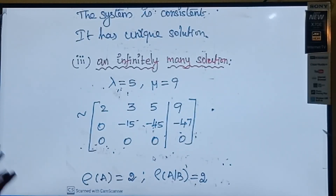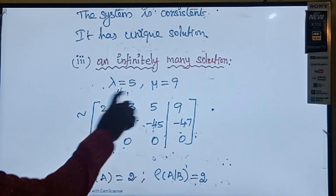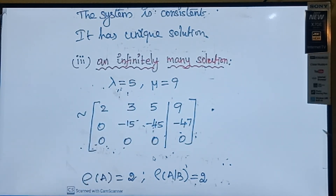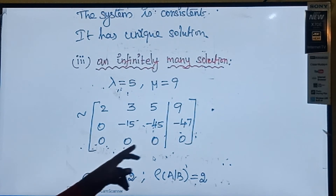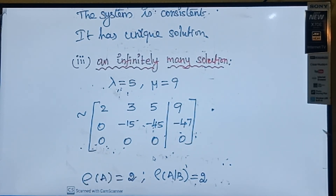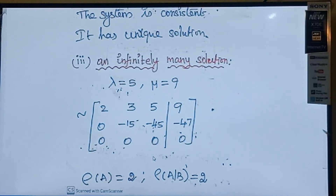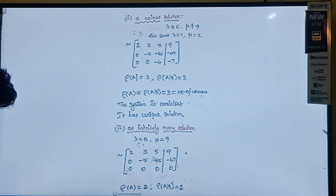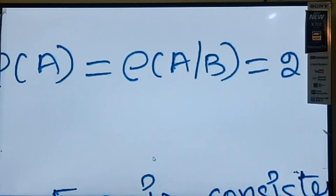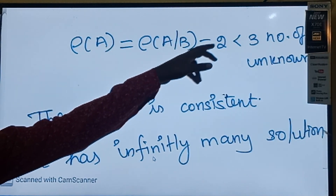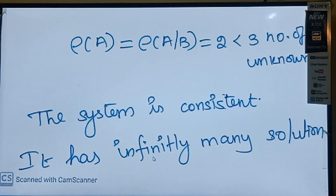Now rank of A: rows 1 and 2 are non-zero, row 3 is all zeros, so rank of A = 2. For the augmented matrix A|B: rows 1 and 2 are non-zero, row 3 is also zero, so rank of A|B = 2. Since rank of A = rank of A|B = 2, but the number of unknowns is 3, which is greater than 2, the system has infinitely many solutions. Thank you, students.